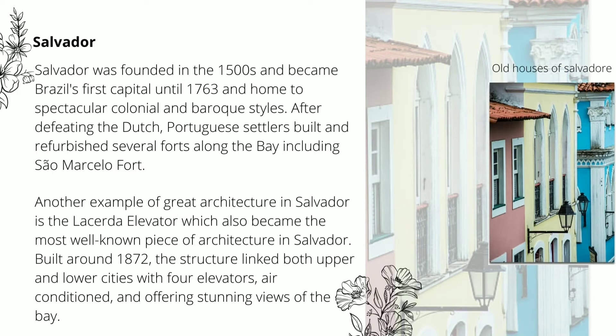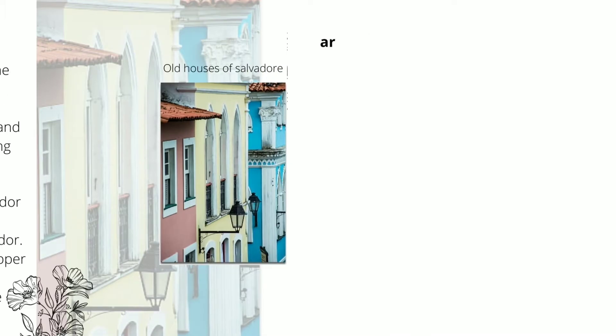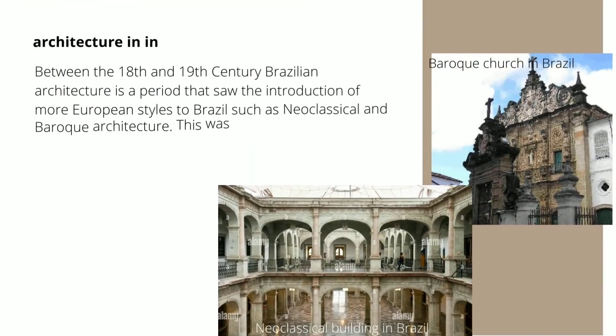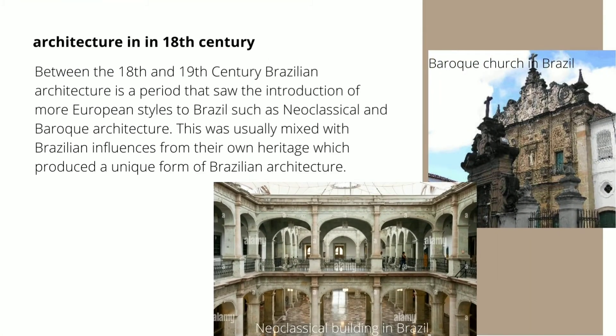Furthermore, the city shelters numerous buildings with meaningful cultural and historical significance. Between the 18th and 19th centuries, Brazilian architecture saw the introduction of more European styles such as neoclassical and Baroque architecture. This was usually mixed with Brazilian influences from their own heritage, which produced a unique form of Brazilian architecture.